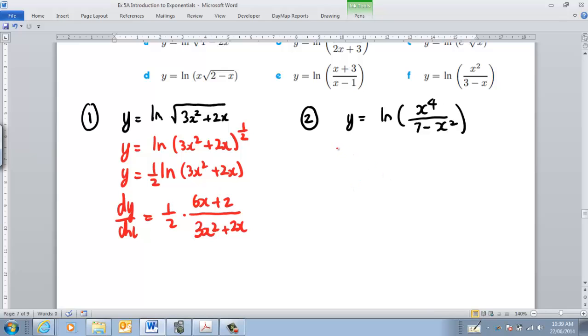Now over here I have to do some rearrangement first of all, so I can say using that LN of that minus that, so that'll be LN of x to the fourth, minus LN of 7 minus x squared. So I can then rewrite this as 4 LN of x minus LN of 7 minus x squared.